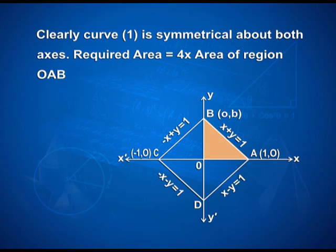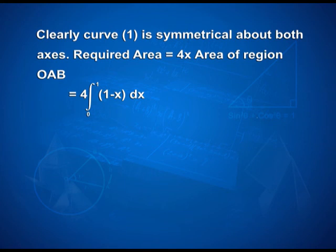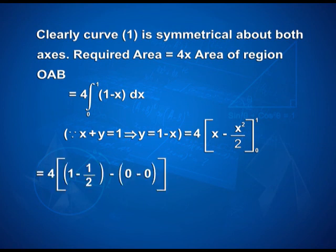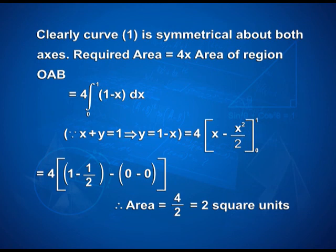The required area is given by 4 times the area of region OAB, which equals 4 times the integral from 0 to 1 of (1 minus x) dx. Since x plus y equals 1 implies y equals 1 minus x, that equals 4 times [x minus x squared/2] with limits 0 and 1. On applying the limits, we have 4 times (1 minus 1/2 minus 0), giving the required area as 4/2, which is 2 square units.